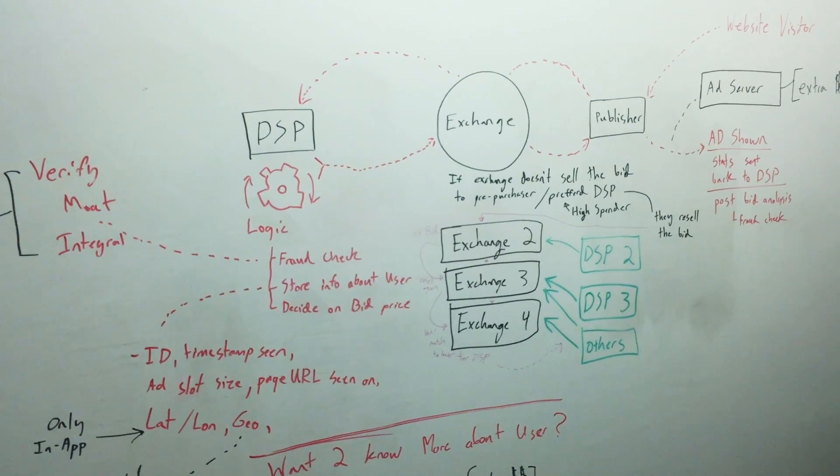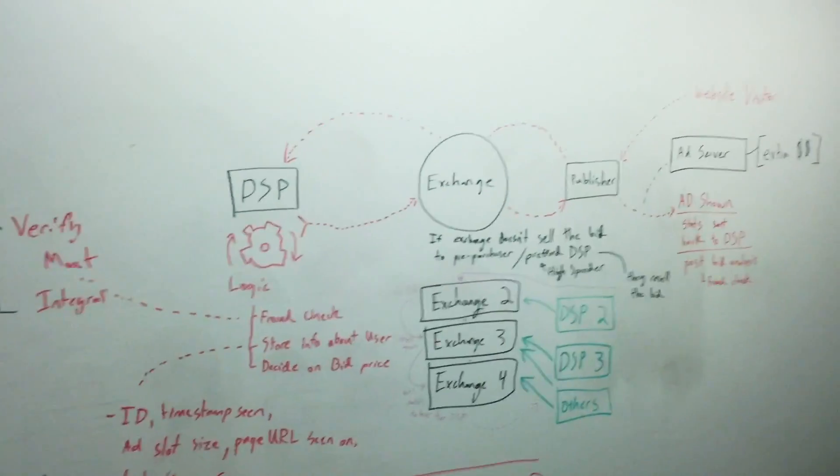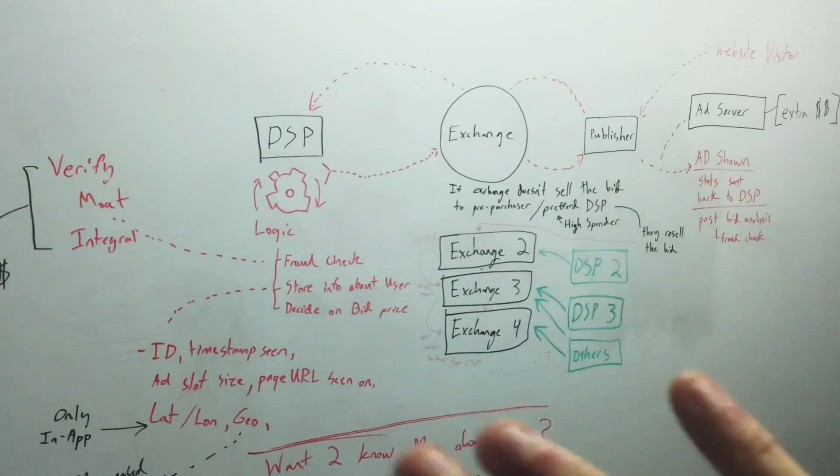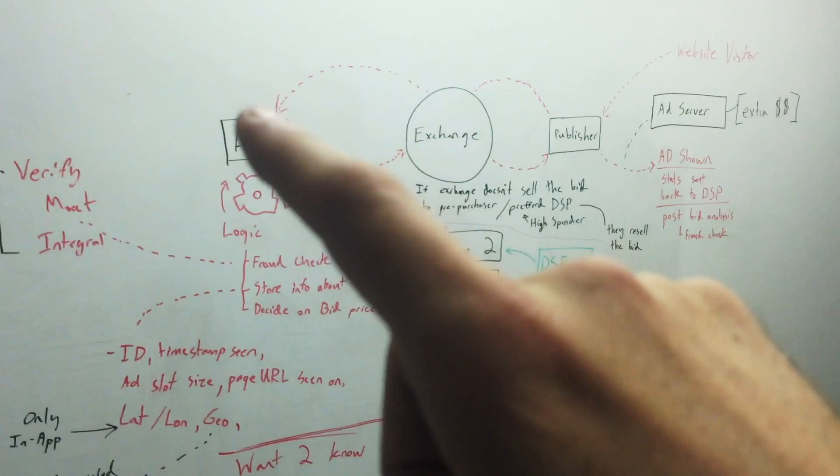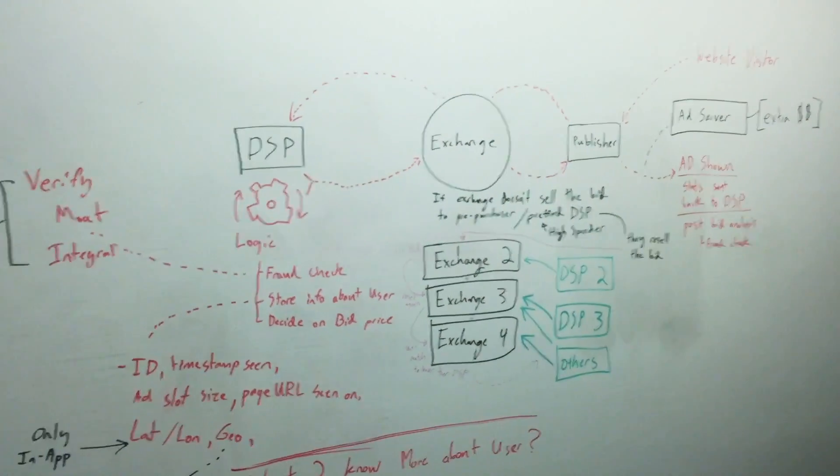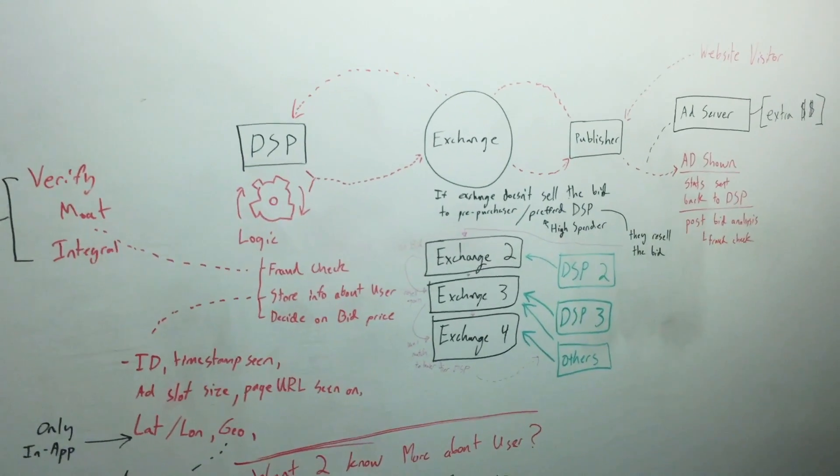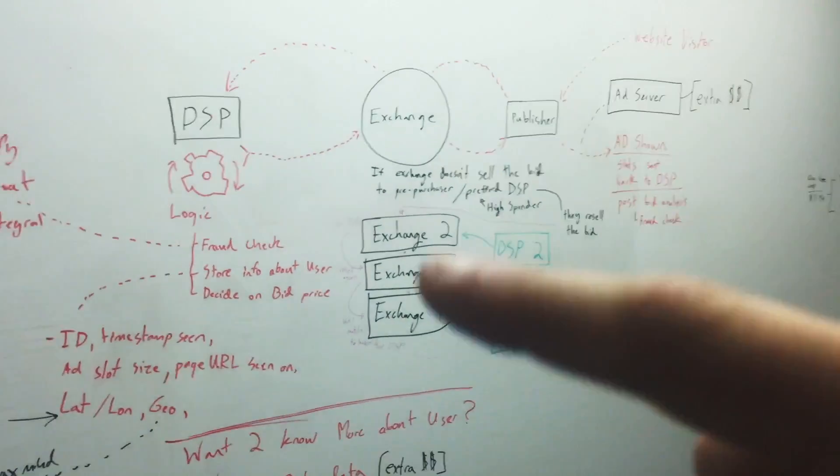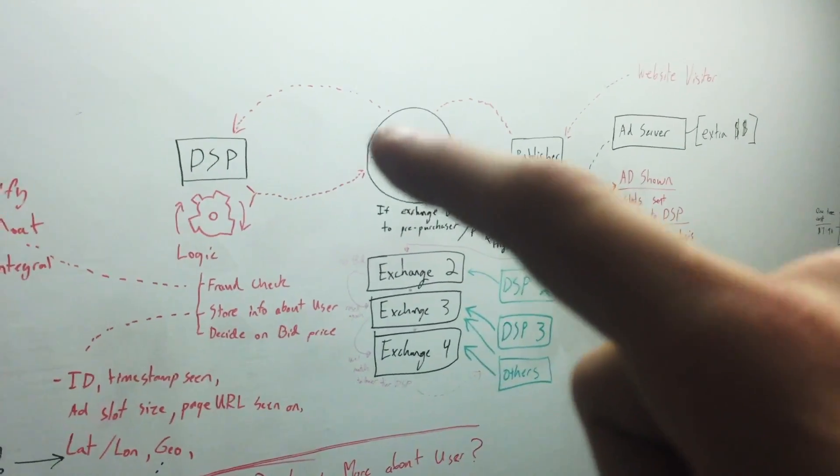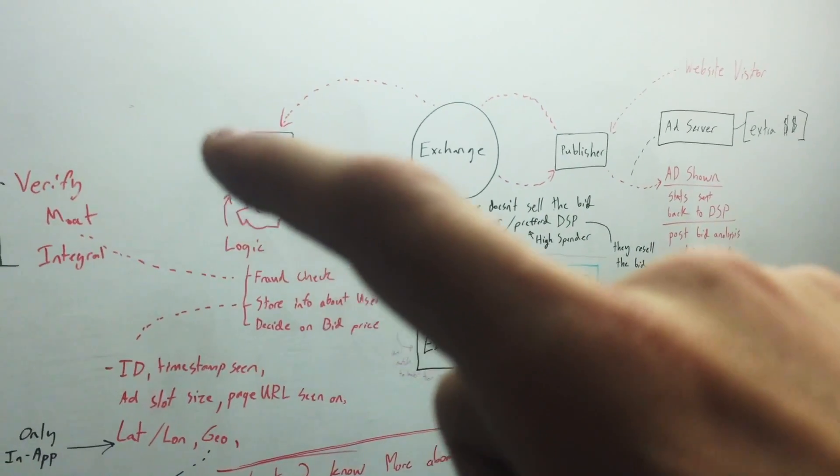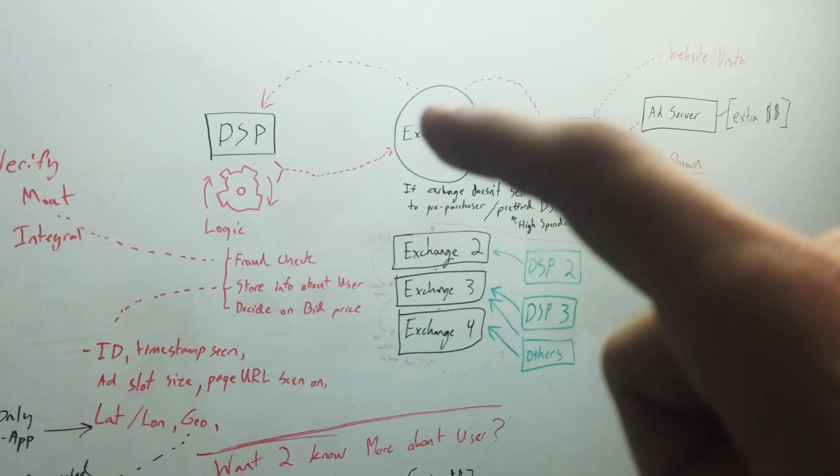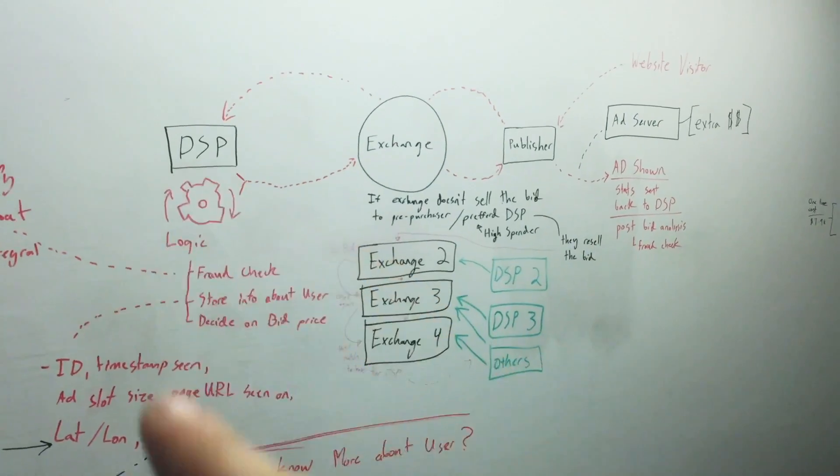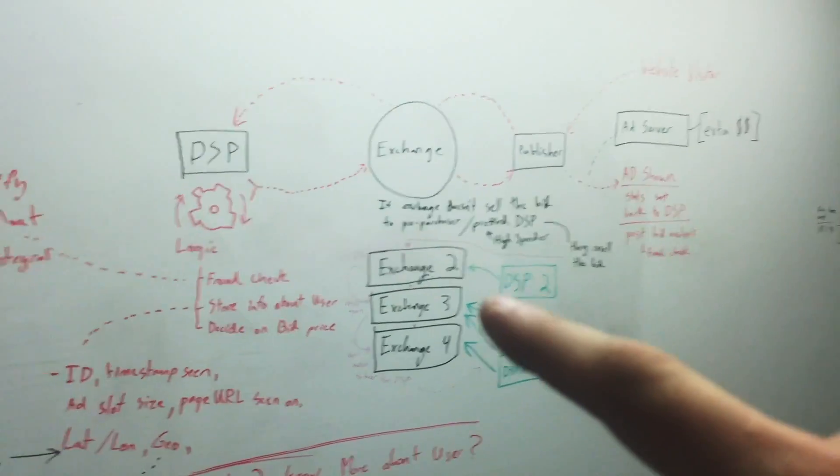And then the other thing that DSPs will do is the big guys that have tons and tons of money and they know they're going to buy a certain number of ad slots per month guaranteed, they'll go to the big boy exchanges and they'll say, hey, I'll upfront X millions of dollars and I'll buy X number of ad slots over the next month, so give me priority over these other DSPs. So what happens is they'll ping that DSP, see if they want to buy it, and then if they want to buy it they get a certain rate and they also get it in front of everybody else.